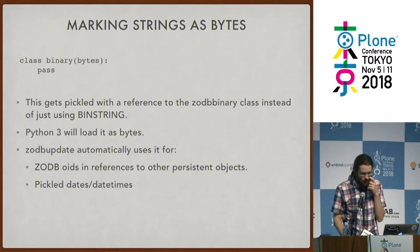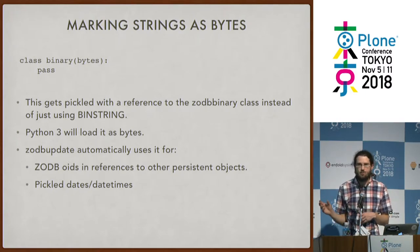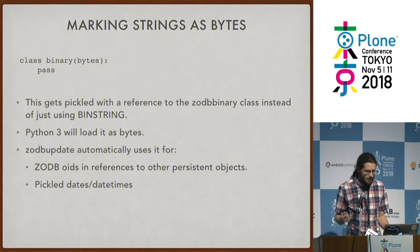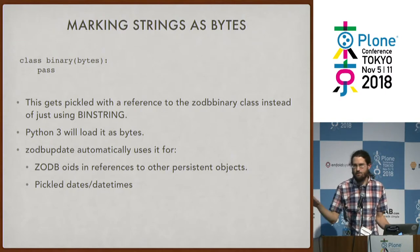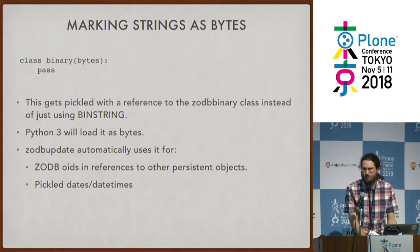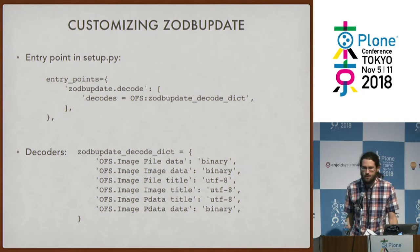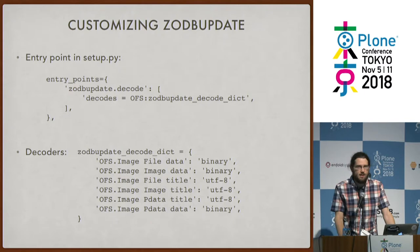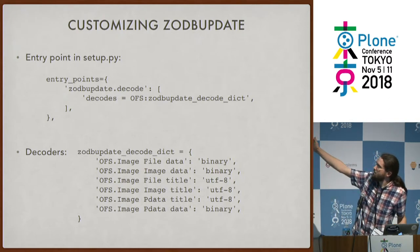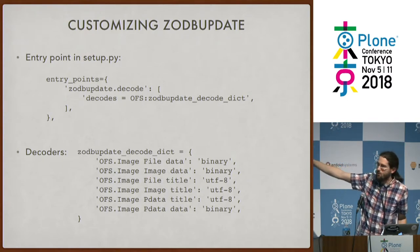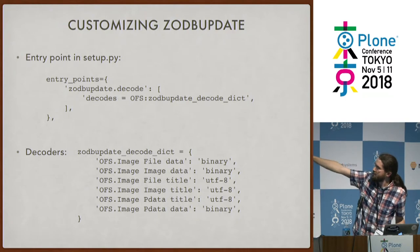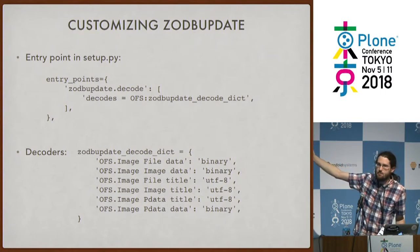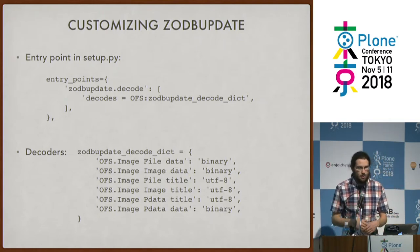How does zodbupdate pickle something explicitly as bytes in Python 2, since Python 2 doesn't have a bytes opcode in the pickle protocol? In zodbpickle there's a class called 'binary' that's a simple subclass of bytes. It behaves exactly like bytes, but when pickled, Python pickles it as a reference to the zodbpickle binary class. So if you load it in Python 2, you get bytes; if you load it in Python 3, you get bytes. You customize zodbupdate with entry points - each package with a persistent class specifies how zodbupdate should handle its objects, with a mapping of module, class name, attribute name, and whether it should stay binary or be decoded as UTF-8.